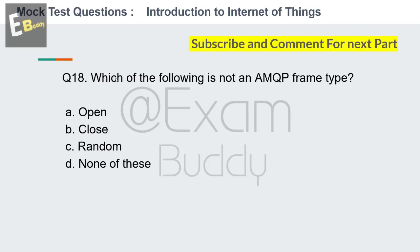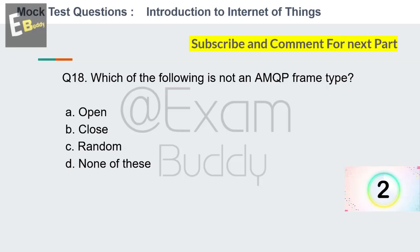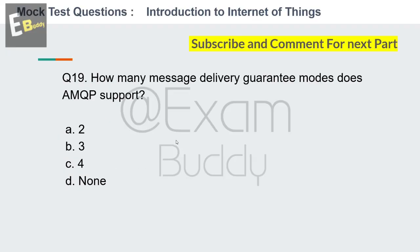Question number eighteen: which of the following is not an AMQP frame type? Options: open, close, random, none of these. The answer is C — random.